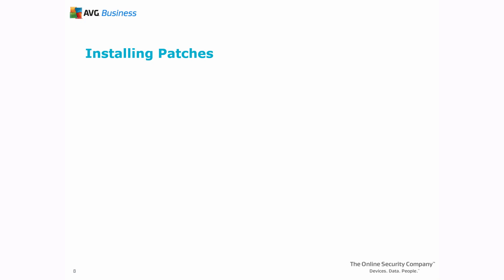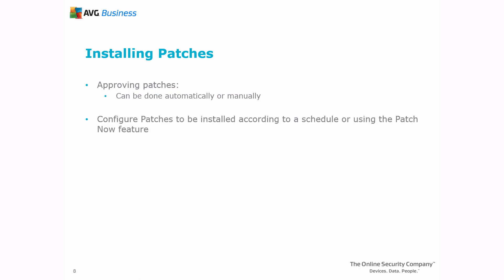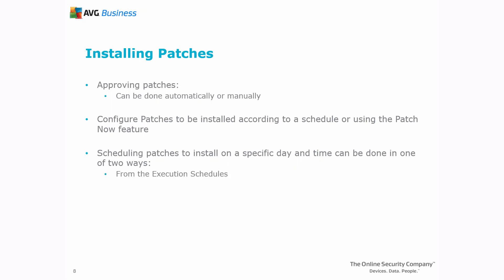So we have covered approving patches, which can be done automatically or manually. But what dictates when a patch is actually installed? You can configure patches to be installed according to a schedule or using the Patch Now feature. Scheduling patches to install on a specific day and time can be done in one of two ways: from the execution schedules or in the patching policy. Let's take a look at the execution schedules first.